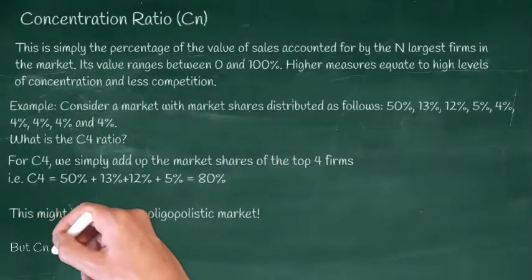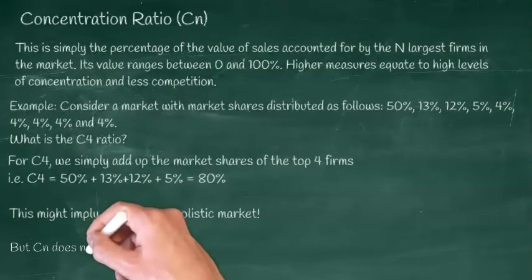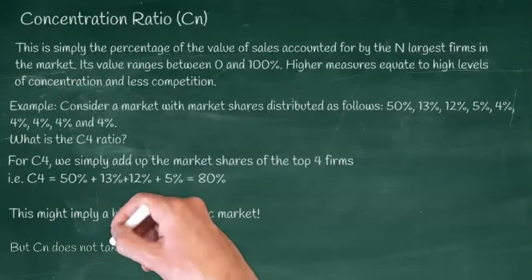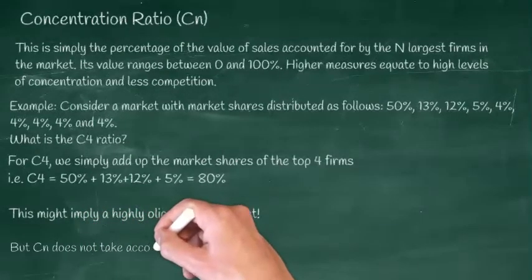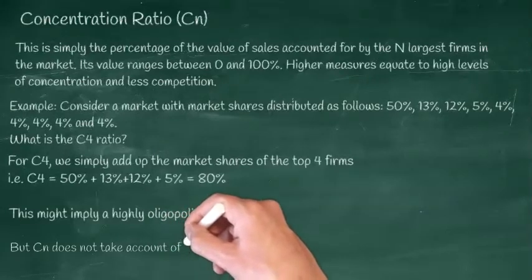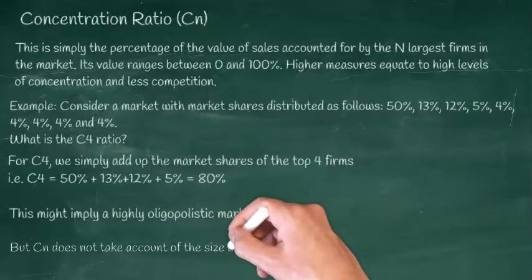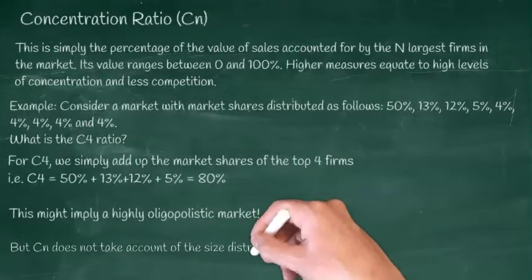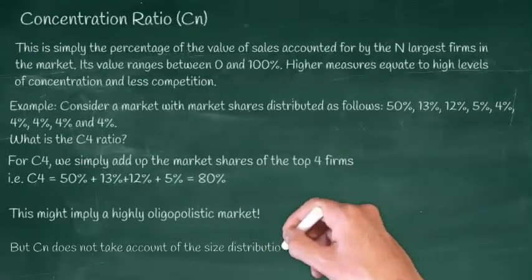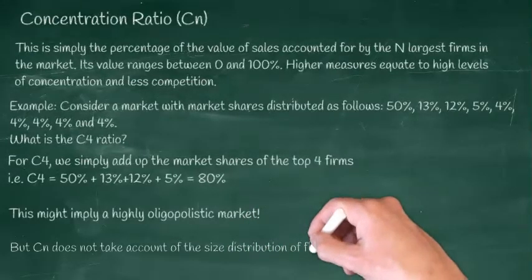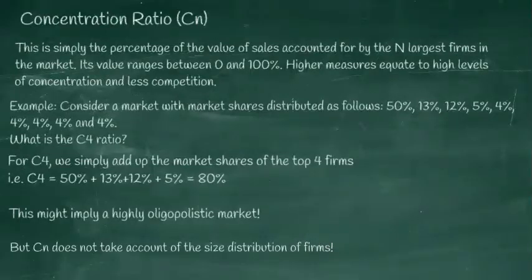However, the simple concentration ratio has a flaw because it doesn't take account of the size distribution of firms. For instance, in our example, one firm has half the market, while the other firms are essentially much smaller and niche players. Our C4 ratio does not really capture this and may give a distorted view of market competition.